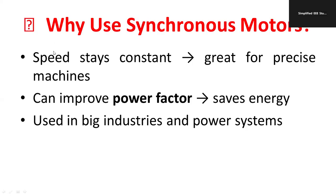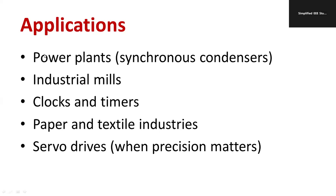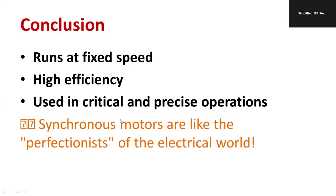Why use synchronous motors? The speed is constant, making them suitable for precise machines like clocks. They can improve power factor when used as synchronous condensers, reducing losses and saving electricity. They are also suitable for big industries and power systems. Applications include synchronous condensers in power plants, industrial mills such as paper and textile industries requiring constant speed, clocks and timers, and servo drives.